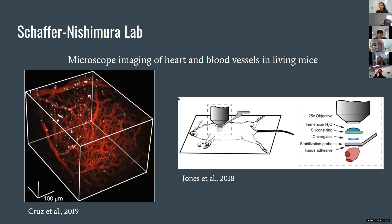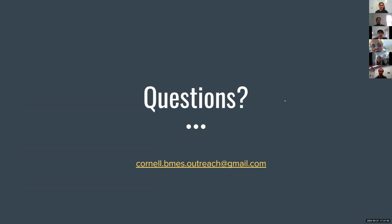The Shaper-Ishimura Lab works with special microscopes that can image the heart and blood vessels in living organisms. Here depicted is the vasculature of a mouse, and they use this to study the development of blood vessels and how it can go wrong, leading to various vascular diseases, so we can better understand the causes and how to treat them. Thank you all for coming and learning a little bit about medical literacy with us. If you have any questions, we'll stick around. There's also our Cornell BMES outreach email if you have any additional questions.